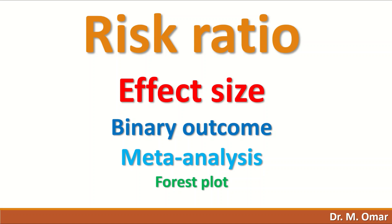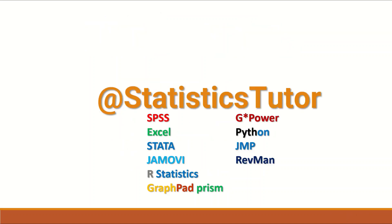A forest plot is produced after the meta-analysis method. A forest plot is basically a graph that summarizes the output of the meta-analysis. It consists of three sections: the descriptive statistics, which shows the estimate of the effect size, the risk ratio for each individual study, the 95% confidence interval, the p-value, and the weighted percentage. The second part is a diagrammatic representation of the descriptive statistics. The third part is the overall estimate of the effect size, which is the risk ratio and the heterogeneity test.